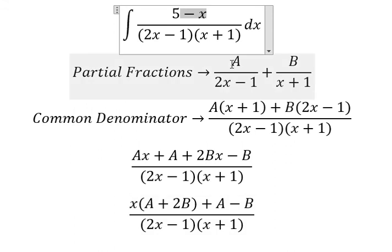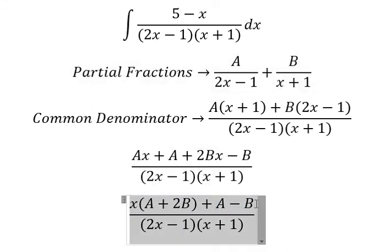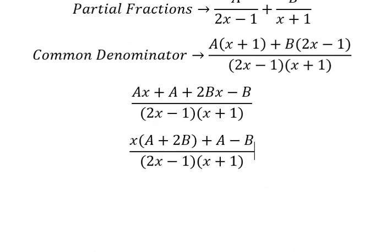So A plus 2B equals to negative number 1. This is about the constant: A minus B should be equal to number 5. And now we need to create the system of equations.